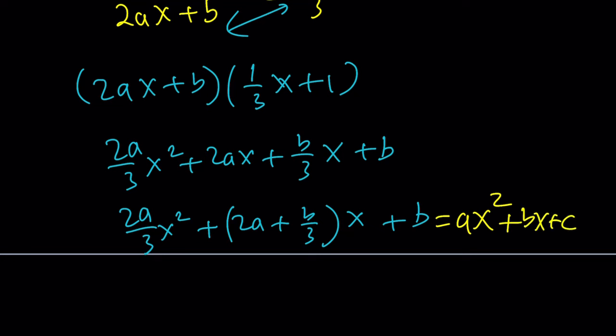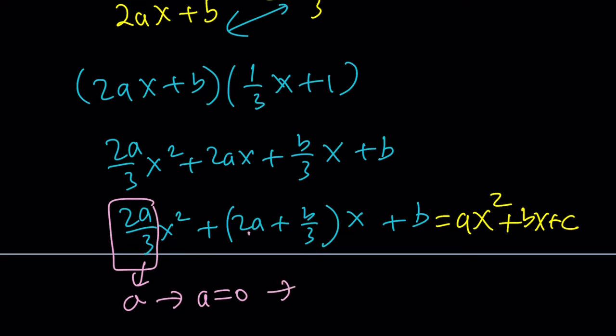We want this to equal AX squared plus BX plus C. Comparing the X squared coefficients, we get 2A over 3 equals A, which means A equals 0. That means P would not be quadratic — at best it would be linear. And this also leads to B being 0, C being 0, but P cannot be the zero polynomial. So P cannot be quadratic.